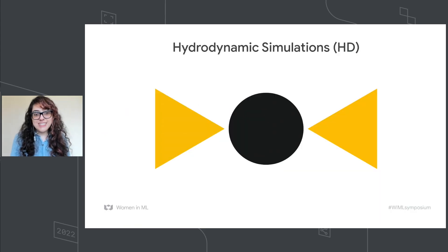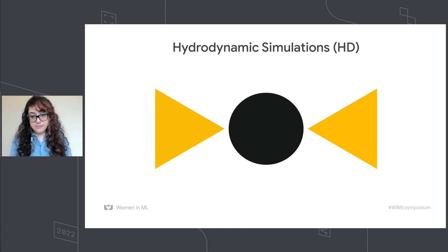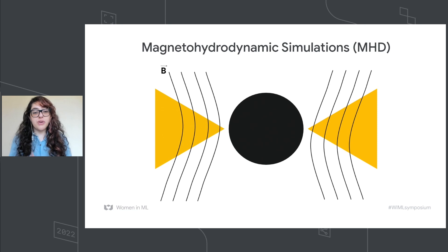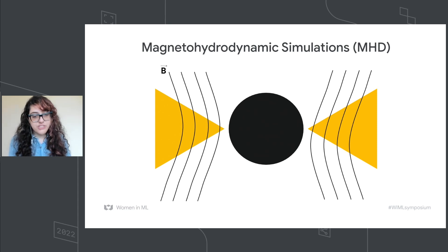To understand the accretion dynamics, we need to simulate. Usually we use hydrodynamic simulations, called HD, which are basically fluid dynamics equations. We also usually have magnetic fields, which are responsible for the transport of angular momentum — so all the process is driven by magnetic fields. To really understand black holes, you need to understand how magnetic fields move around them. These kinds of simulations are called magneto-hydrodynamic simulations, or MHD.